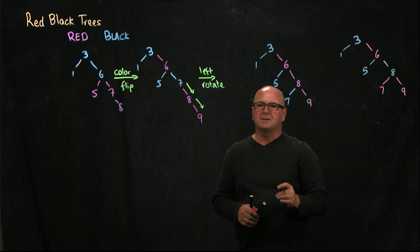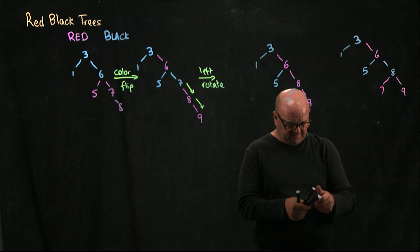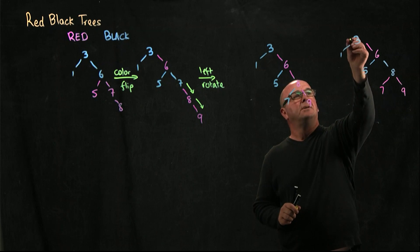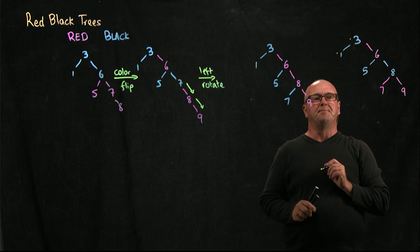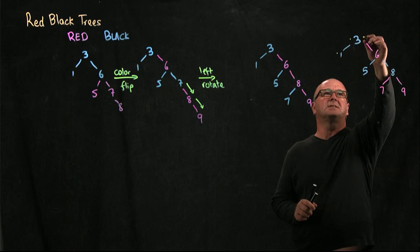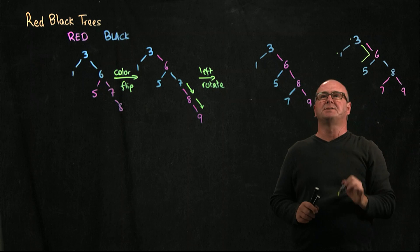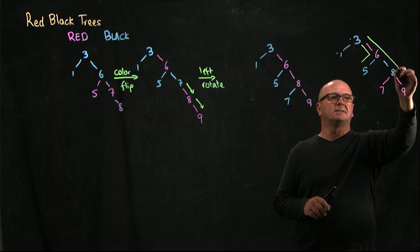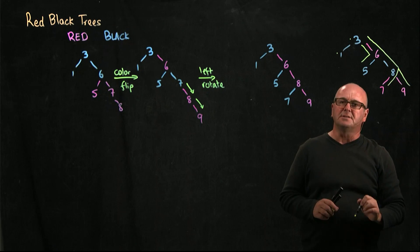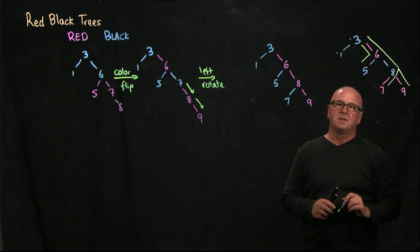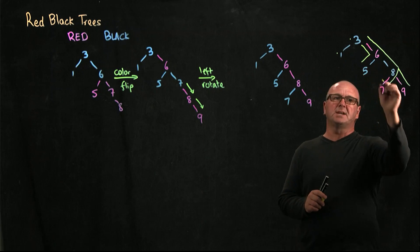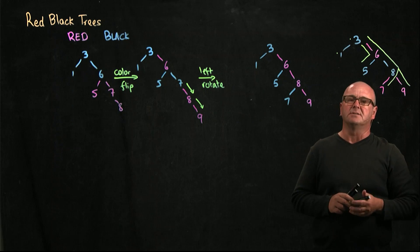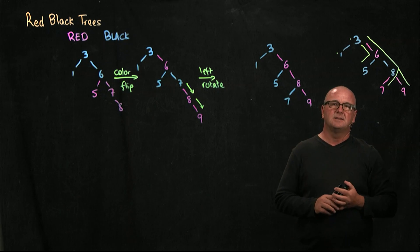Is that a valid red-black tree? If we start at the 3 and go to the left, we have two black nodes. Going down the right side, we've got one path with two black nodes, and another path through the 8 to either the 7 or the 9 that also has two black nodes. So every path from root to leaf has two black nodes and there are no two consecutive red nodes — that's a valid red-black tree.